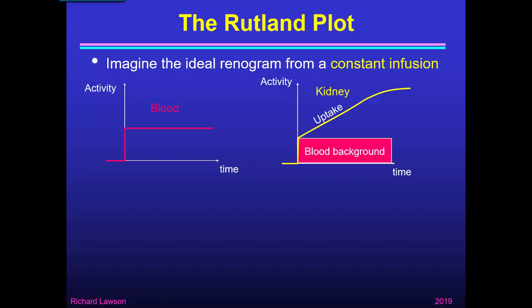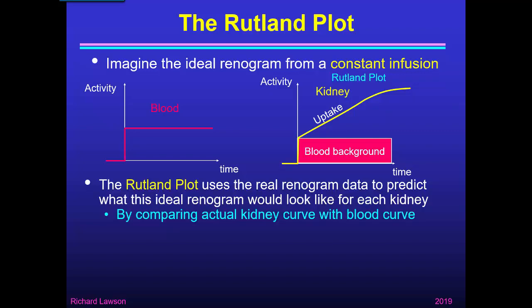Since the blood activity is constant, the blood background in the renogram would also be constant, giving a simple renogram from a constant infusion. This graph is called the Rutland plot, but we don't actually need to give a constant infusion to achieve it, because the Rutland method is a mathematical technique that takes the real renogram data and uses it to predict what this ideal constant infusion renogram would look like — by comparing the actual kidney curve with the actual blood curve.